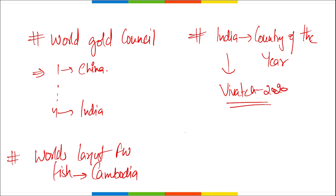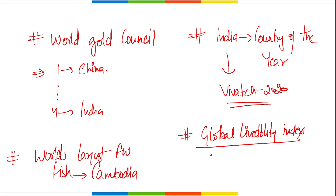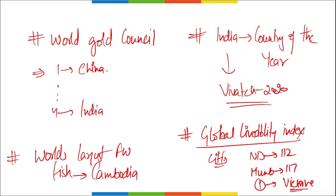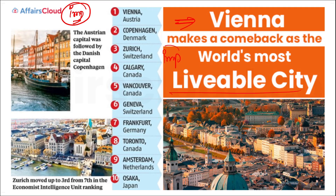Global Livability Index 2022 ranks cities — New Delhi is ranked 112 and Mumbai is ranked 117. Vienna has topped this index, making it the world's most livable city for 2022. Vienna, the capital of Austria, secured the top position, followed by Copenhagen, Zurich, Calgary, Vancouver, Geneva, and Frankfurt.